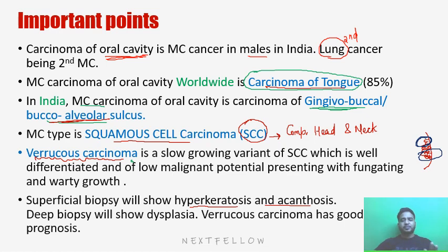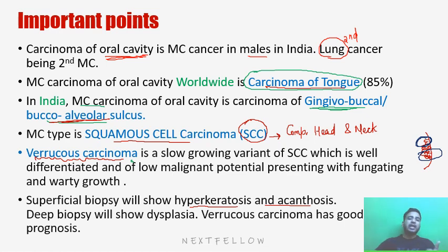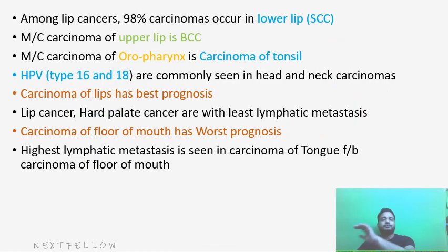So to summarize: the most common carcinoma is carcinoma of the oral cavity. In India, the most common site is gingivobuccal sulcus; rest of the world, the most common site is carcinoma of the tongue. Verrucous carcinoma is a subtype of squamous cell carcinoma, which is the most common type of carcinoma.